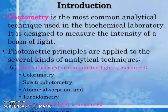What is photometry? In simple language, photometry is the most common and radical technique used in the biochemical laboratory. It is designed to measure the intensity of a beam of light. Photometric principles are applied to several kinds of analytical techniques, where absorbed or transmitted light is measured: colorimeter, spectrophotometry, atomic absorption, and turbidimetry; and where emitted light is measured: flame photometers.